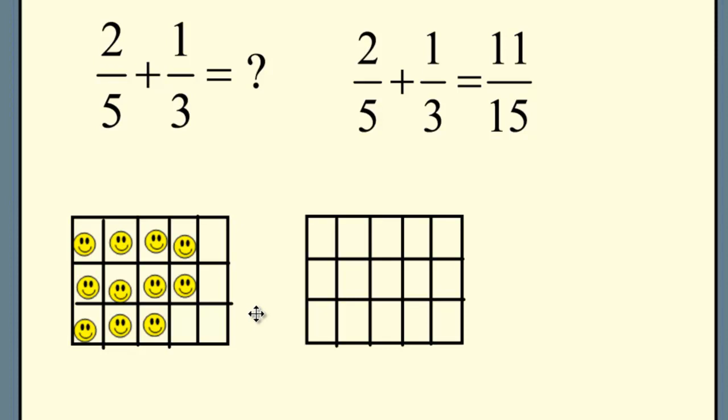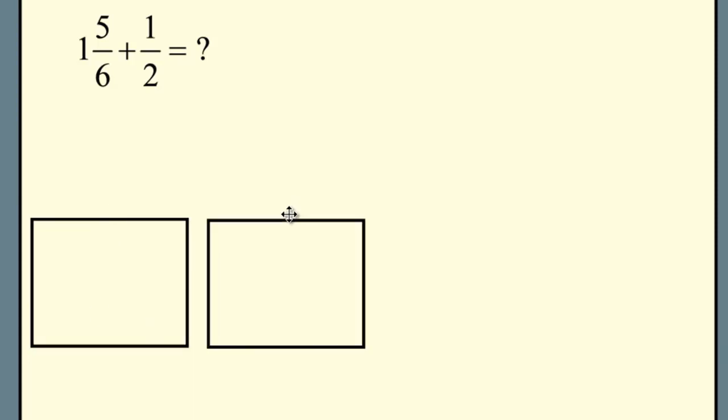Now we're going to try a mixed number example. Let's suppose that we've eaten 1 5/6 of one orange and then we eat half of another orange. How much in all have we eaten? In other words, here's a problem we want to answer: what's 1 5/6 plus 1 1/2? We'll begin by getting our rectangles. That represents the one. We'll be dividing this one into 5/6 and we'll be dividing this one into a half so we can add and combine.